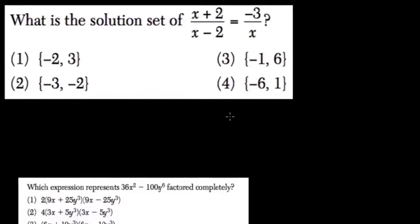What is the solution set of this problem? So we have x in the denominator here. I'll multiply everything by x. So we have x times x plus 2 over x minus 2 equals negative 3.